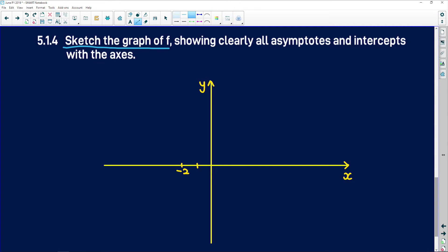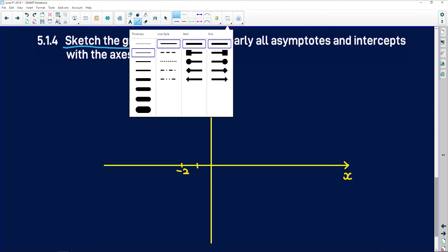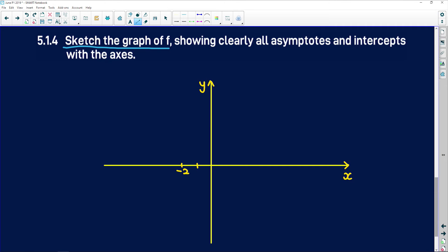Try and use these dotted lines for your asymptotes. So at x equals negative 2, you're going to have an asymptote. Negative 2.